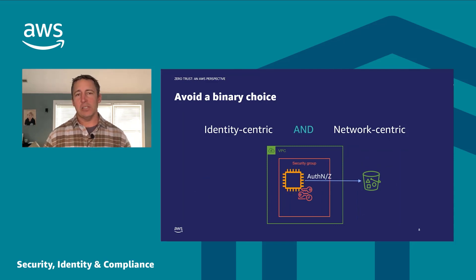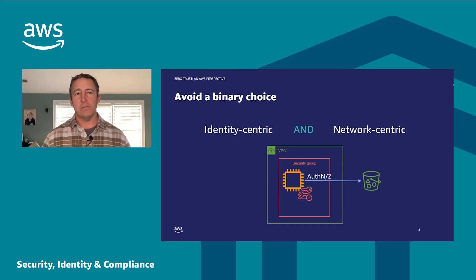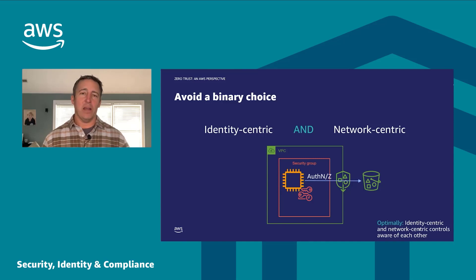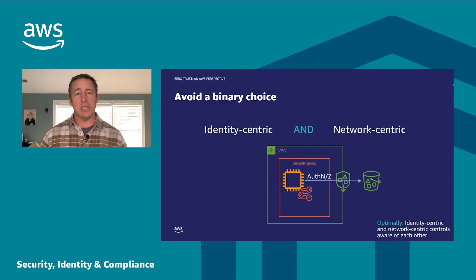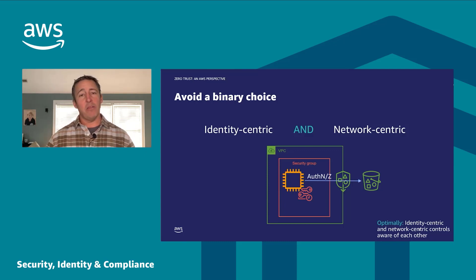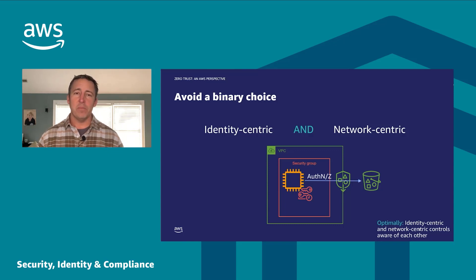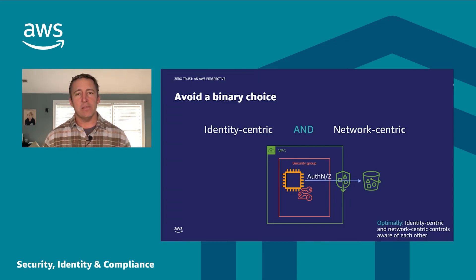Identity-centric controls are invariably more fine-grained, but they work best when they operate within the firm outer boundary of network-centric controls. Optimally, the two should not only coexist but be aware of one another. In AWS, the most salient example is a VPC endpoint policy. A VPC endpoint is a gateway to an AWS service at the border of your network in the cloud, and you can put a policy on it that lets you reason about the who, the what, and the network locations — creating a policy aware of both network and identity together to really dial up access control.